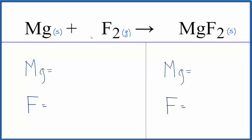So first we'll count up the atoms on each side. It's not written, but we have one magnesium atom, two of these fluorine atoms.